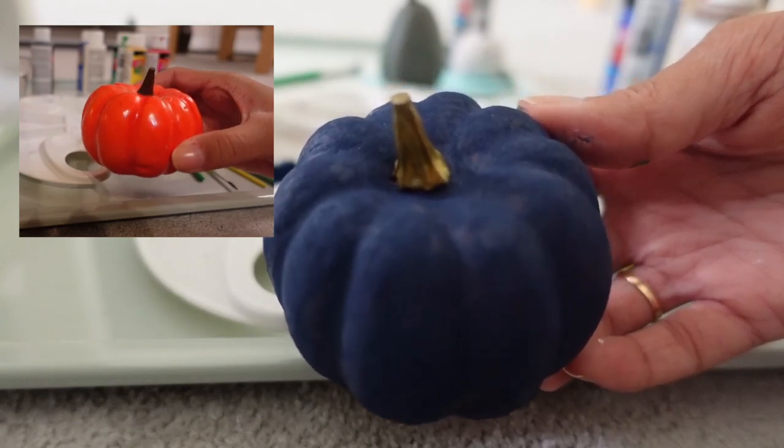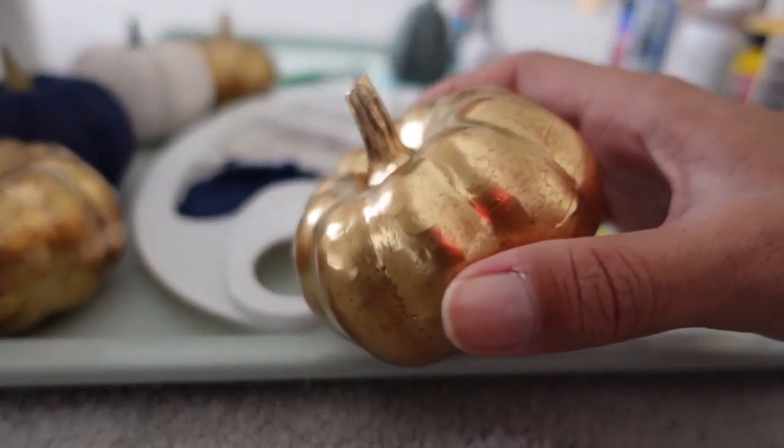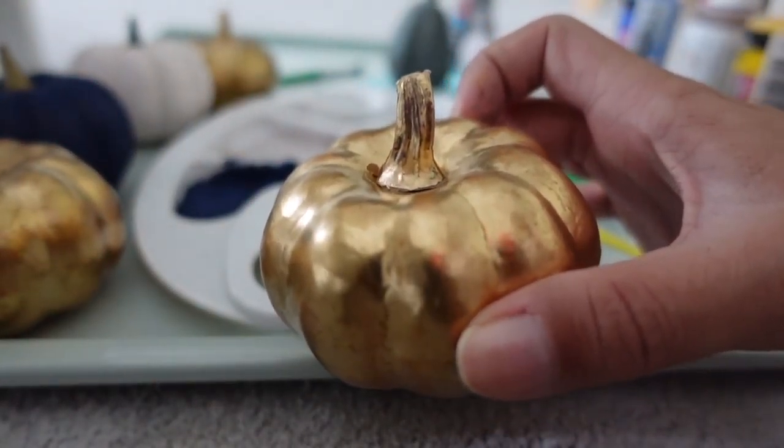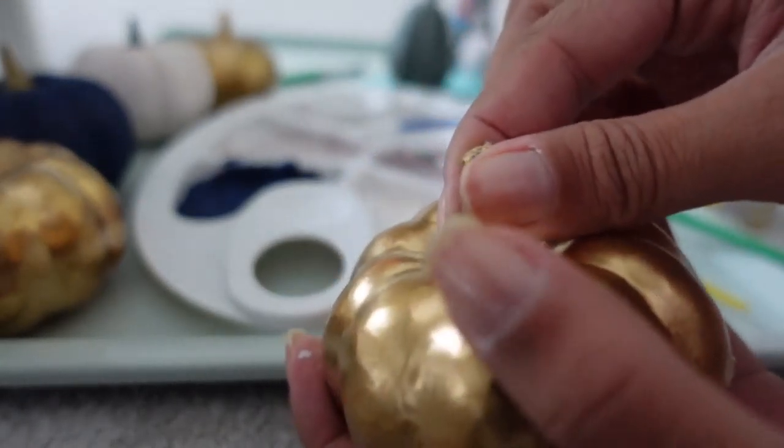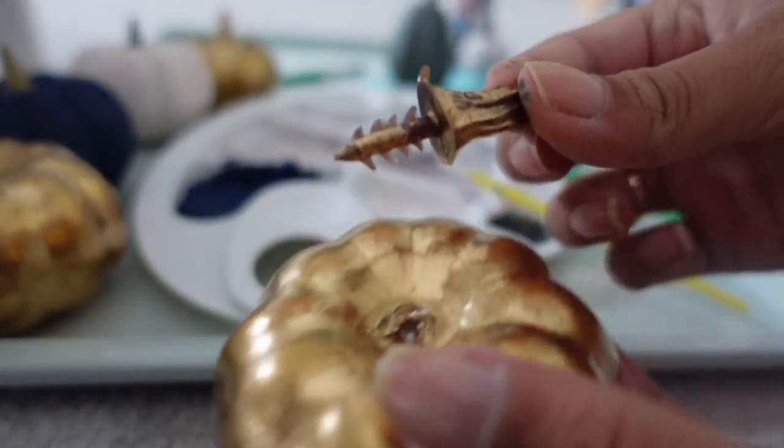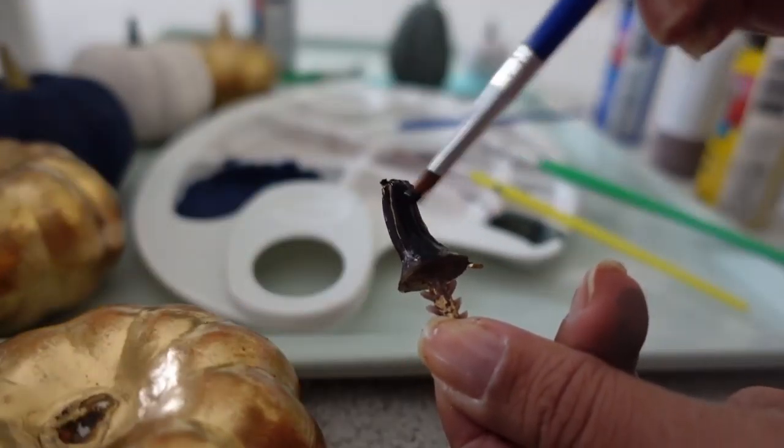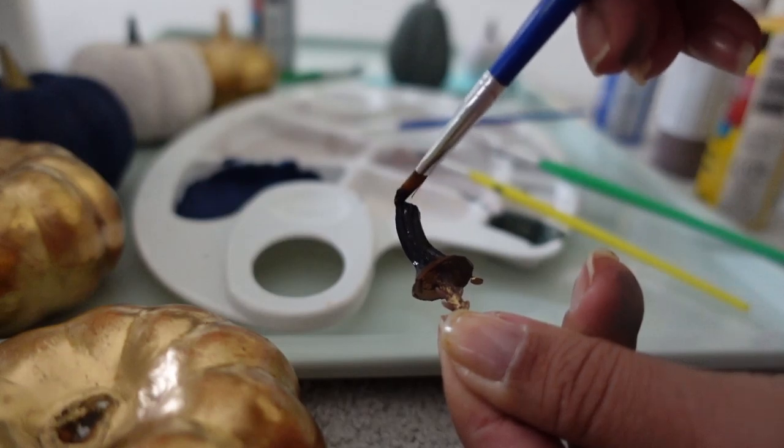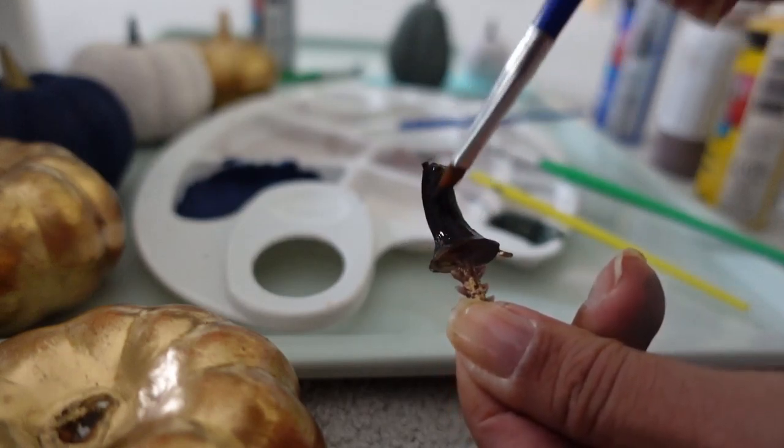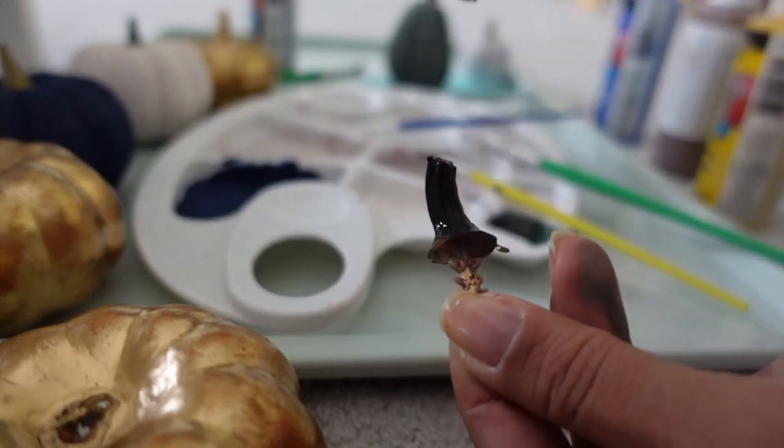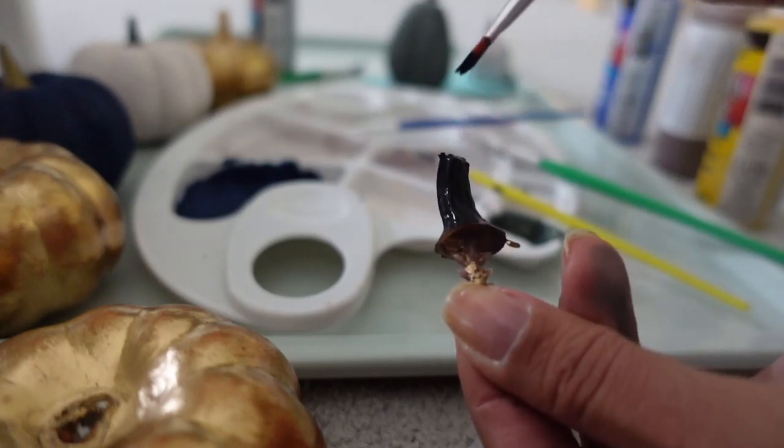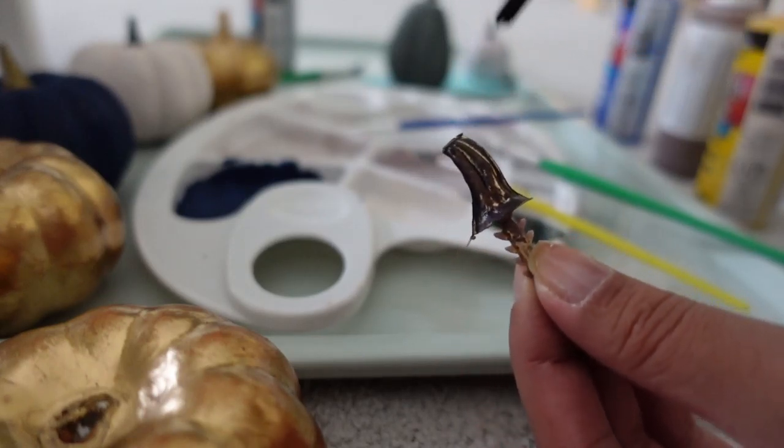I have one more small hack to show you. I found these gold pumpkins at the dollar store which are super cute but I think they just lacked some contrast, so I actually just pulled the stem off and actually painted just the stem black and I think it made such a huge difference in the final look of the pumpkin. It just made it look a little more expensive and have a little more contrast so the stem didn't get completely washed out with the rest of the pumpkin.